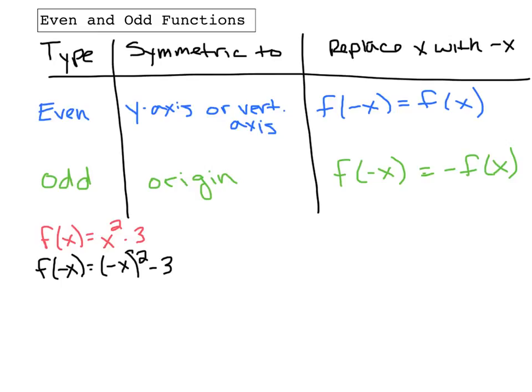Okay, negative x squared is going to be x squared, and we can't simplify it any farther. So, x squared minus 3 is our answer. Well, that turns out to be the same thing as x squared minus 3. So, f of negative x is equal to x squared minus 3, which is equal to f of x. So, this is even.